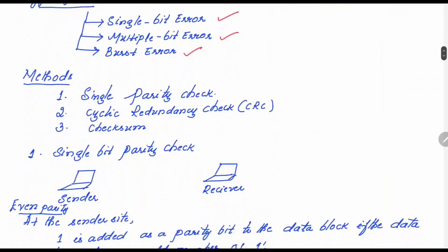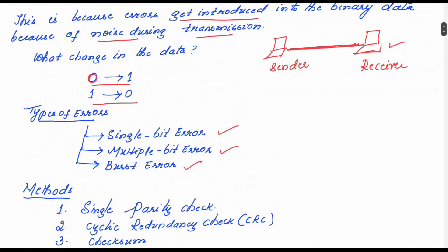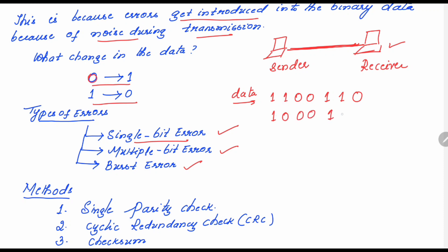What is the difference between these three types of errors? A single bit error means simply one bit is getting changed in the data sent from the sender. For example, in a single bit error, suppose the sender is sending some data — at the receiver side only one bit gets changed. One bit remains as it is but another becomes 0, while the remaining bits stay the same.